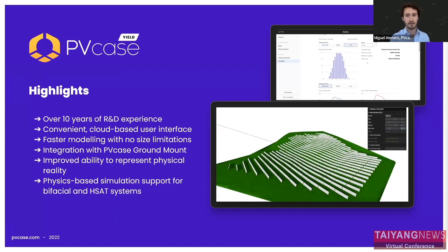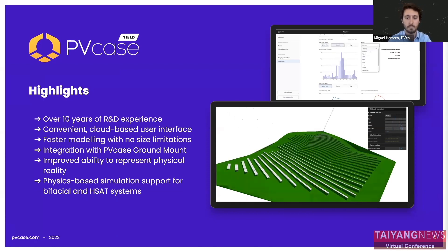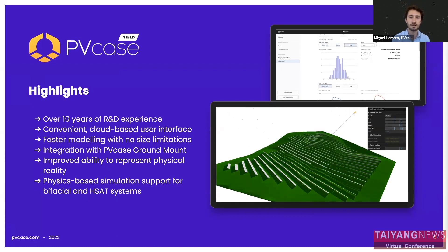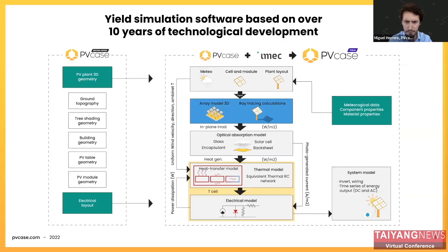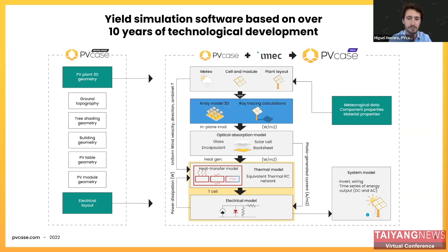The software that completes our suite of products is PV Case Yield — a revolutionary yield estimation software fully integrated with our AutoCAD design tool. It was launched late last year and is currently in beta testing with some clients. PV Case Yield has been developed in partnership with IMEC, a world leader in solar cell testing and simulation, which developed the ray tracing simulation and physics-based models underpinning our software over 10 years.